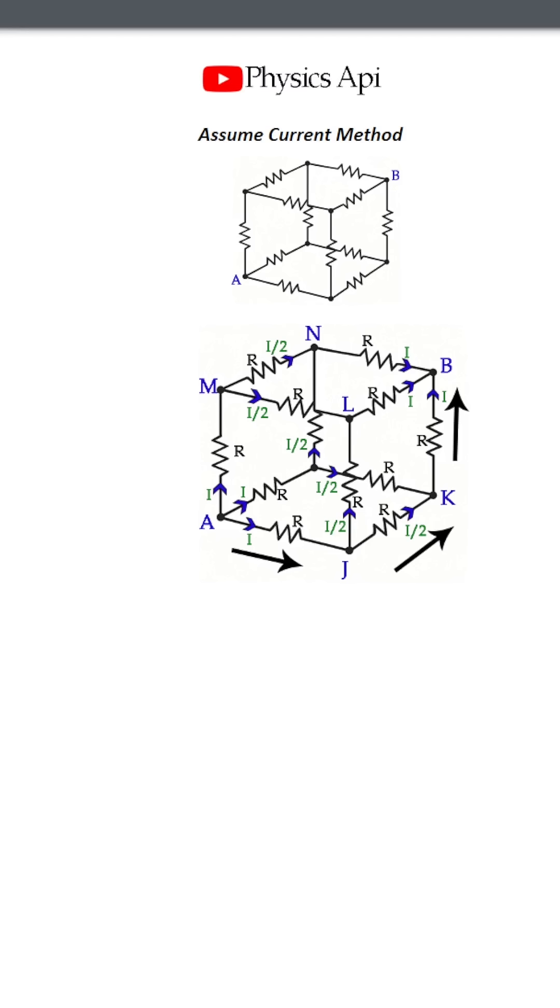From A to J, the current is I. At J, it splits equally into I divided by 2 in each branch. At K, two halves combine again to make I. So, the total current reaching B is again 3I.